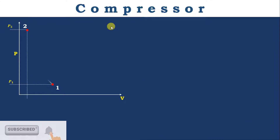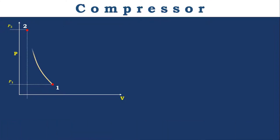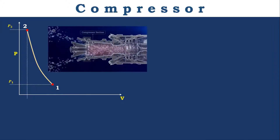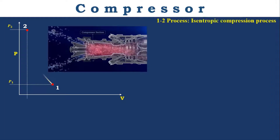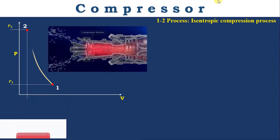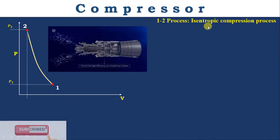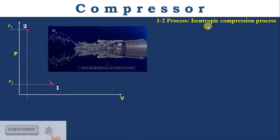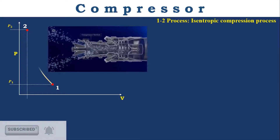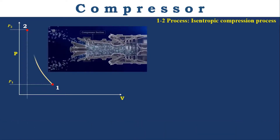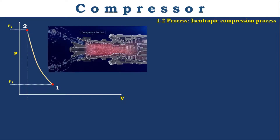First, the compressor. A compressor is a device used to increase the pressure of air from low pressure to high pressure. The process used in the compressor is the isentropic compression process. Here, isentropic indicates that there is no heat transfer from or to the compressor, which means the compressor is isolated from the surroundings, or the compressor surface temperature is equal to atmospheric temperature.